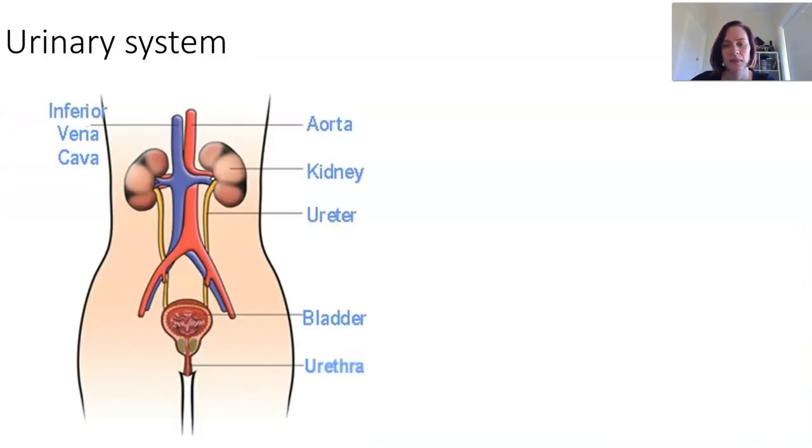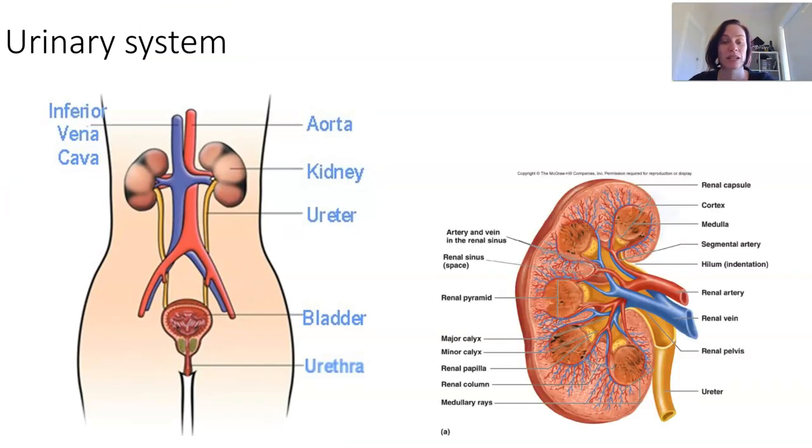The urinary system consists of the kidneys, the ureter, the urinary bladder, and the urethra, and the kidneys are the main excretory organs for the elimination of nitrogenous waste. The kidneys play a really important role in filtering the blood, and they filter about 50 litres of blood every hour.